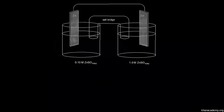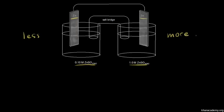A concentration cell is a cell that has the same electrodes on both sides. Here we have a zinc electrode on the left and a zinc electrode on the right. The only difference is the concentration — on the left side there's a 0.10 molar solution of zinc sulfate, and on the right side there's a 1.0 molar solution. So the left side is less concentrated and the right side is more concentrated. There's a tendency for the concentrations to be equalized, and that's enough to create a small voltage.